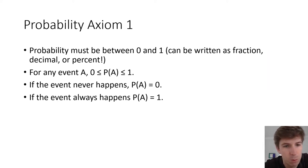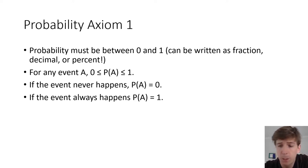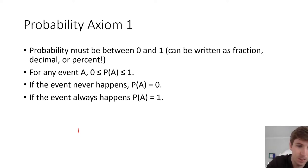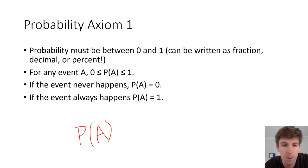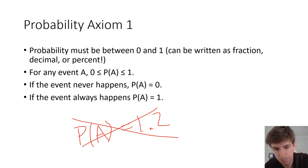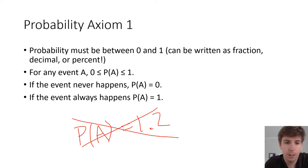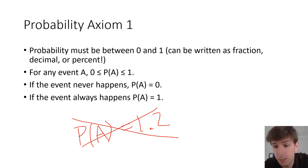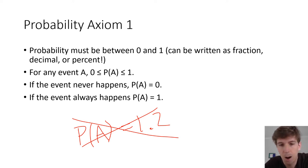A few probability rules to keep track of: probability must be between zero and one. You can write it as a fraction, decimal, or percent, but it never makes sense to say the probability of event A equals 1.2 — that makes no sense. If an event never happens, the probability is zero. If the event always happens, the probability is one.